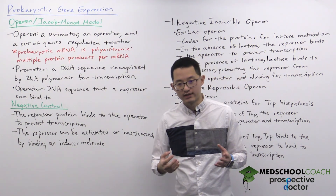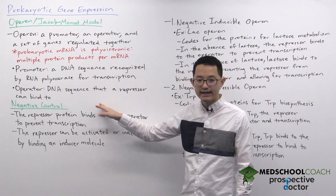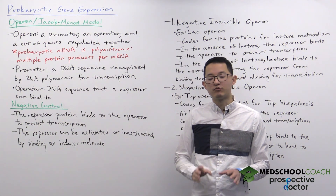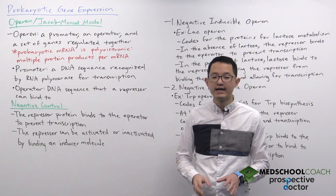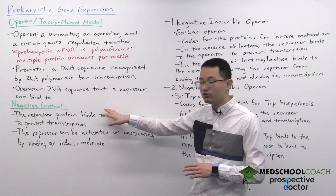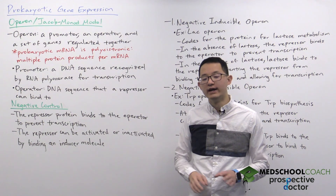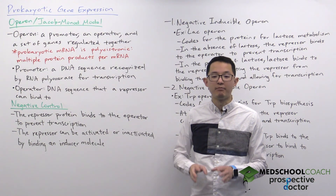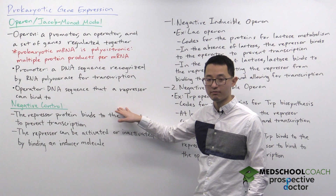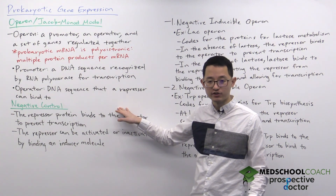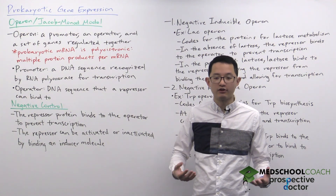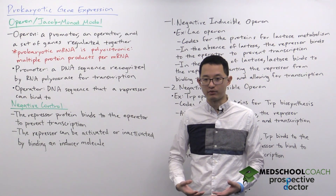To understand the repressor we can look at negative control. Operons can be regulated in two ways: negative control or positive control. In this video we're going to look at negative control, and in the next video positive control. Both negative and positive control have two types of their own, so there are really four different types of operons.